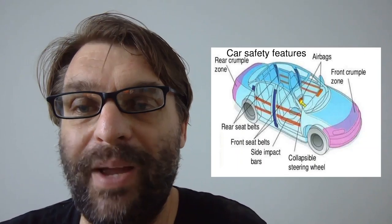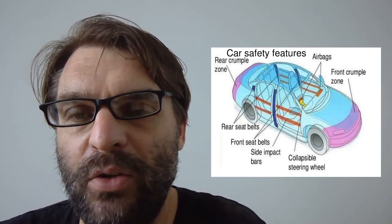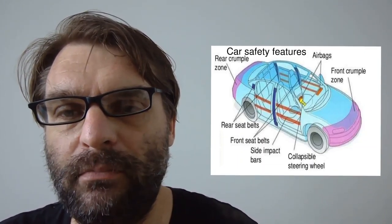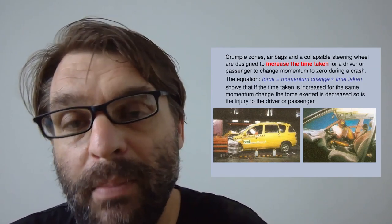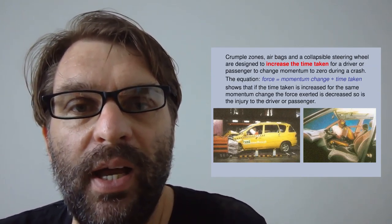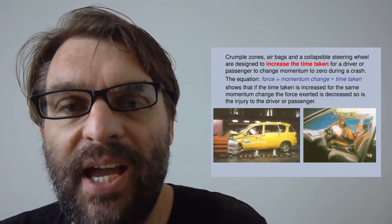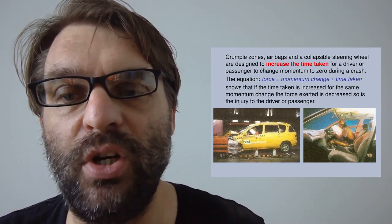When you collide, you go from a very fast velocity to zero. Crumple zones and airbags are designed to increase the time taken for the driver or passenger to change momentum to zero. Because force equals momentum change divided by time taken, if you increase the time it takes for that change in momentum to occur, the force exerted is decreased, and so the injury to the driver or passenger is reduced. That's the whole point of things like airbags — they increase the time for that momentum change to occur.